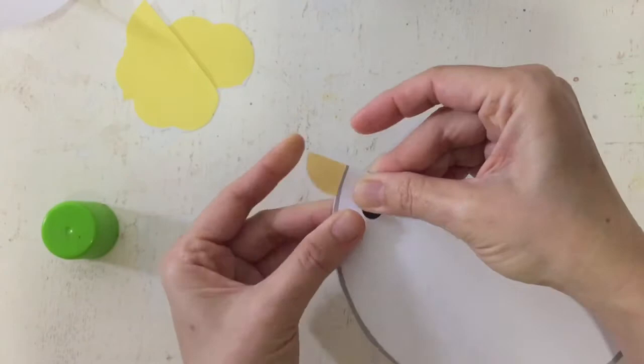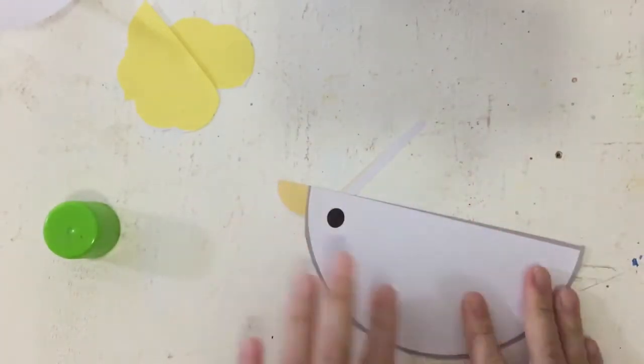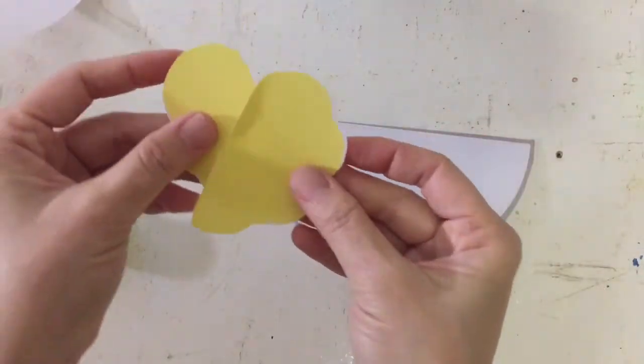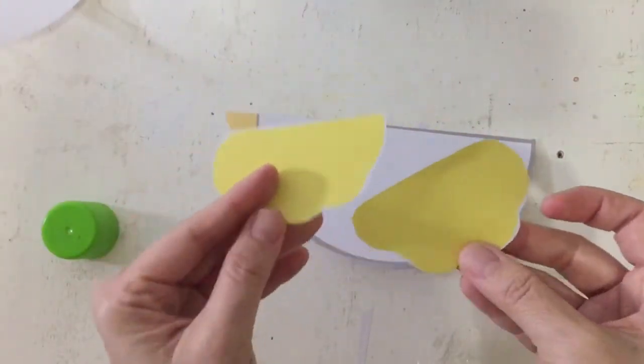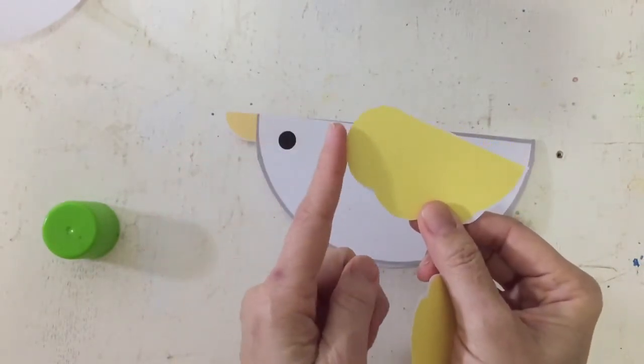There you go. And next, we put the wings on both sides. Make sure that this part, the circle part, is near the eye.